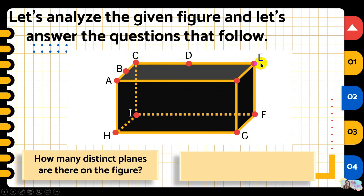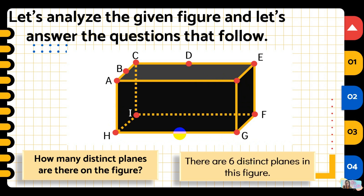The back face contains point C, point D, point E, point F, and point I — that's the fifth plane. The front face has point A, point H, and point G — that's our sixth distinct plane. So there are 6 distinct planes in this figure.